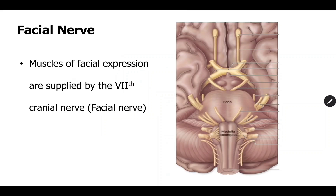The nerve that supplies all muscles of facial expression is the facial nerve. The facial nerve is the seventh cranial nerve. There are 12 cranial nerves: two originate from the cerebrum itself and ten originate from the brain stem area. The facial nerve — the seventh cranial nerve — takes its origin from the brain stem area.